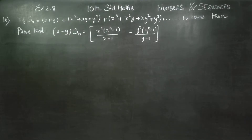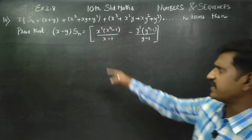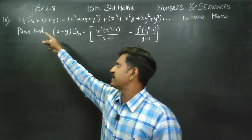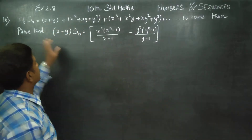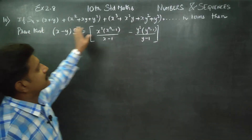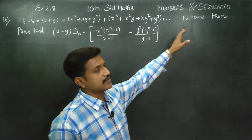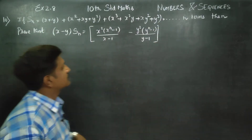In exercise number 2.8, sum number 10, one is equal to the expression. Sn is equal to — that means one is equal to the term — n terms.